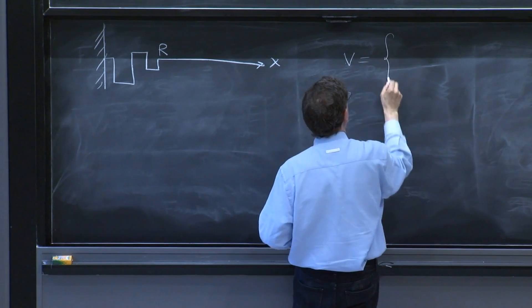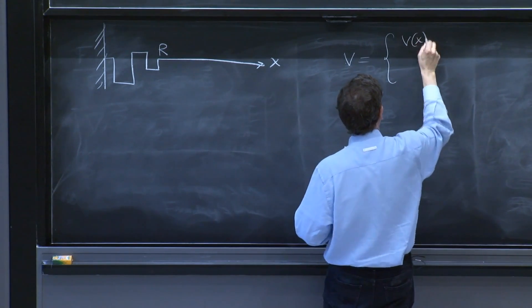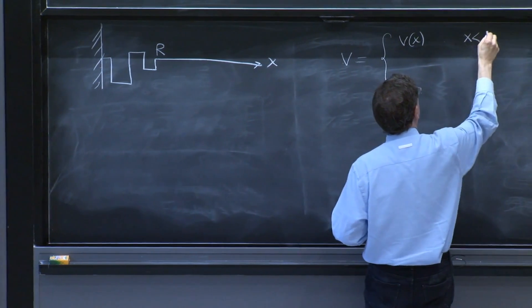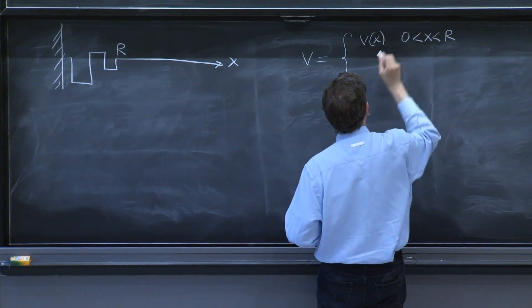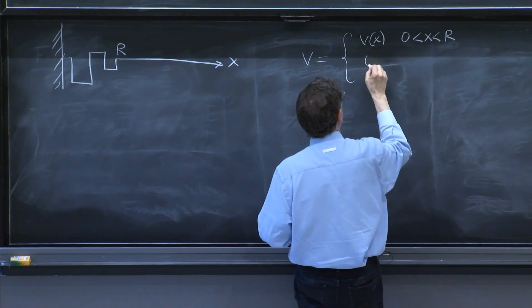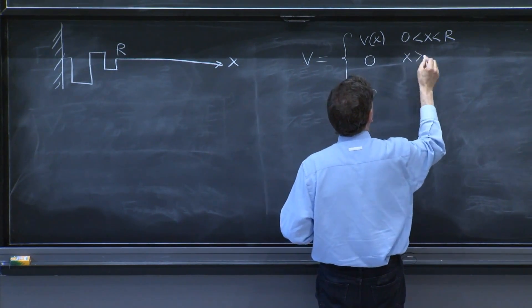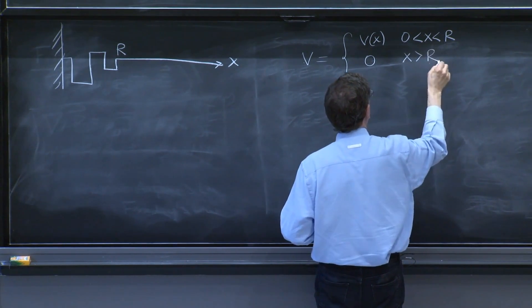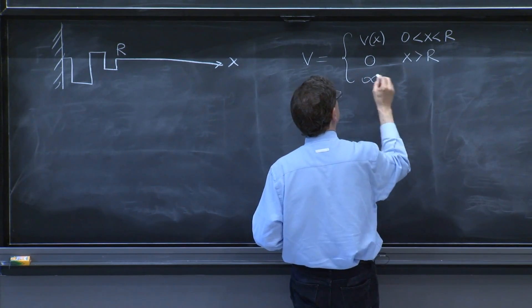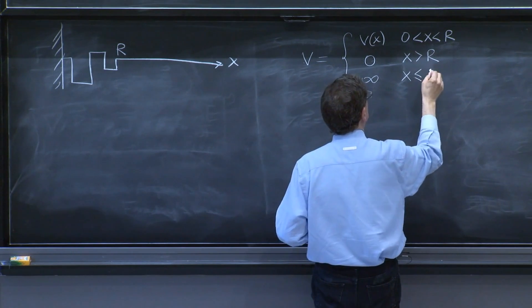So the potential is some v of x for x between capital R and 0, is equal to 0 for x larger than capital R, and it's infinity for x negative.